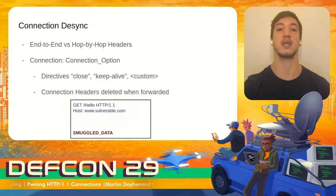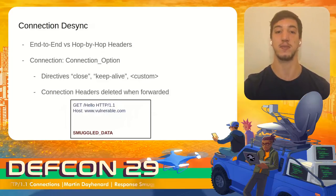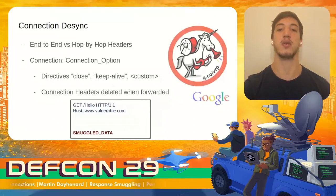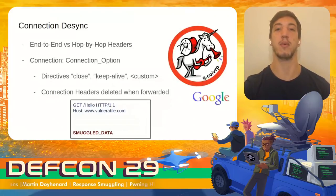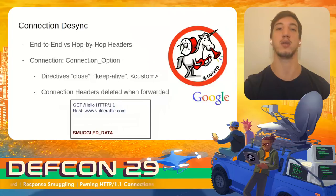This will cause that the smuggled data is used as the prefix for the next arriving request. This issue was reported under Google's Vulnerability Reward Program, and Google fixed it and confirmed that it was possible to use it to smuggle requests in all their public domains.